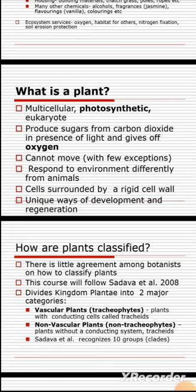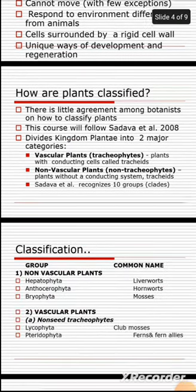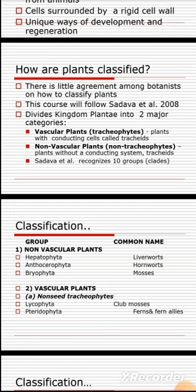Plants have unique ways of development and regeneration. Their cuttings can develop through vegetative cycles, asexual reproduction, and also sexual reproduction. How are plants classified? According to Sadaf et al. 2008, plants have been divided into two major categories. We are using Sadaf as a standard in Bachelor of Science General Bio 112. The two major categories are vascular plants and non-vascular plants.